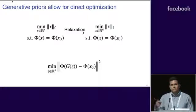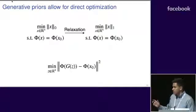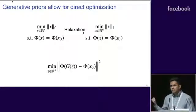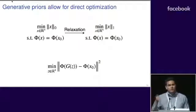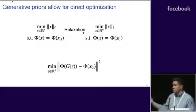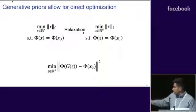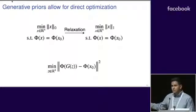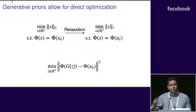Due to the computational intractability of the L0 norm, you can do a convex relaxation, where you instead minimize the L1 norm, which is the convex surrogate for sparsity. This is great when you have linear measurements, but this may not be possible with nonlinear measurements. What you can do with the generative model instead is you can directly optimize this optimization problem, where Φ can be linear or nonlinear.